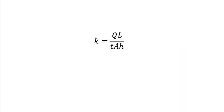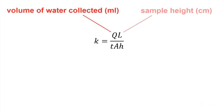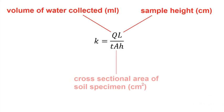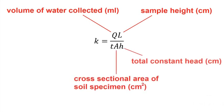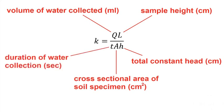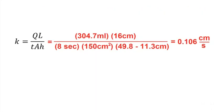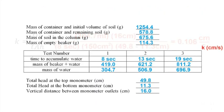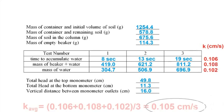The coefficient of permeability for the constant head test is given by this equation, where Q is the volume of water collected, L is the sample height, A is the cross sectional area of the soil specimen, H is the total constant head which is the difference in head between the two manometers, and T is the duration of water collection. Calculate K for each of your three tests. And finally calculate the average of these three to get the final value for conductivity.